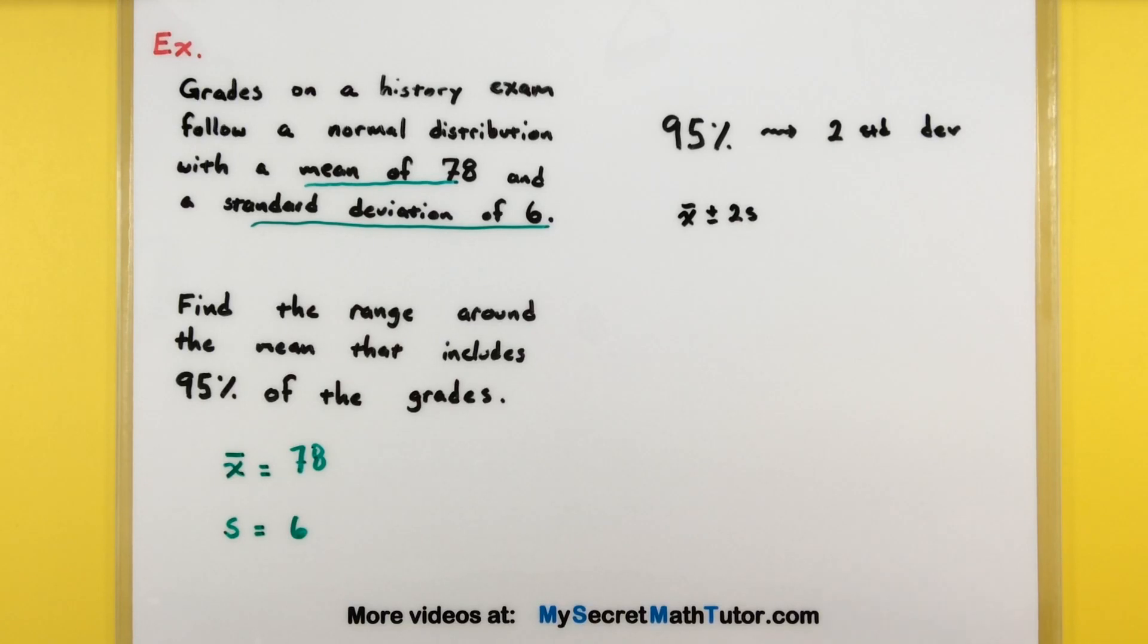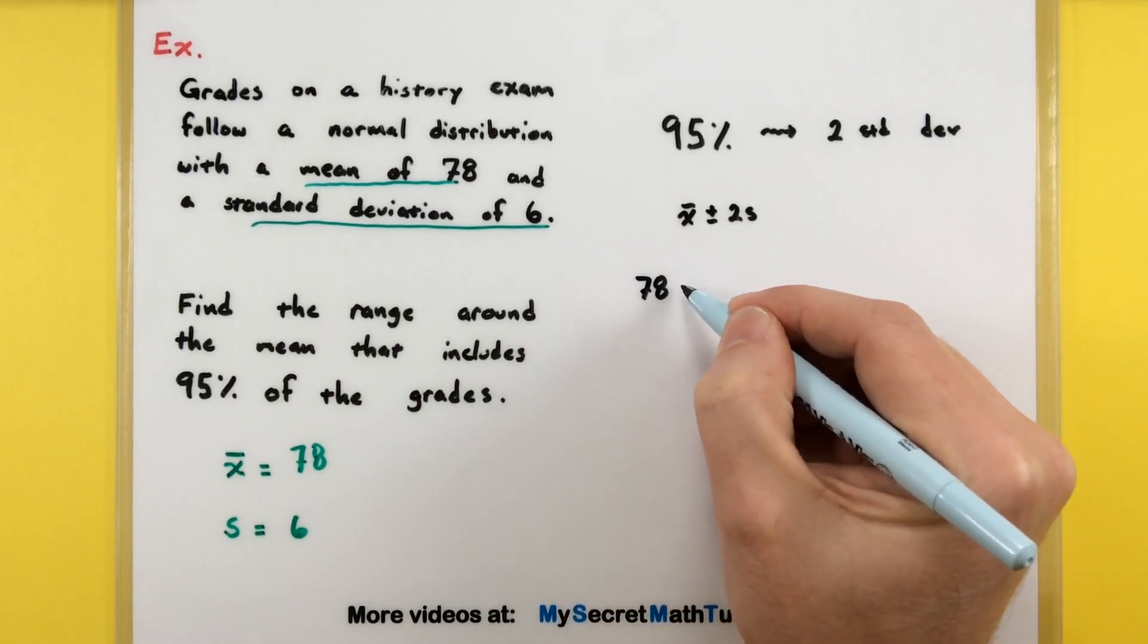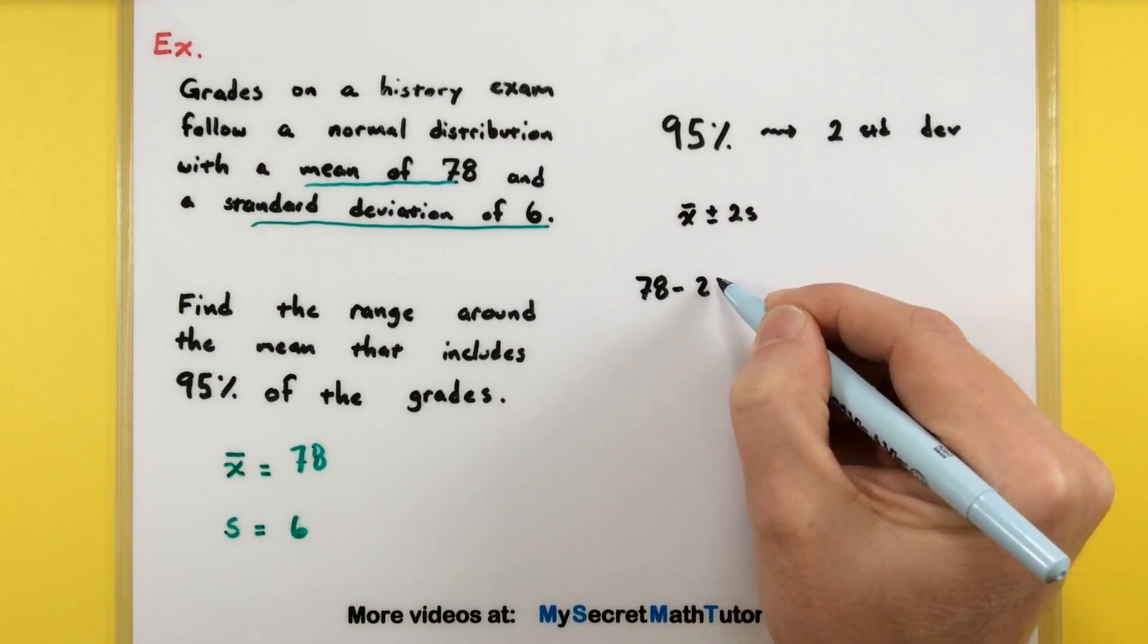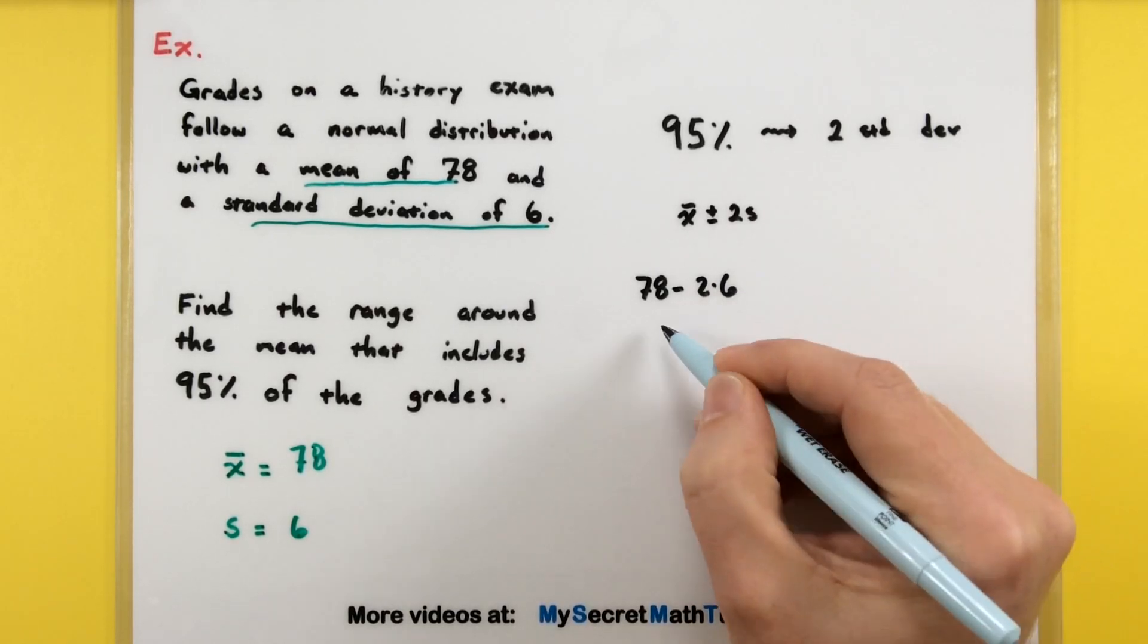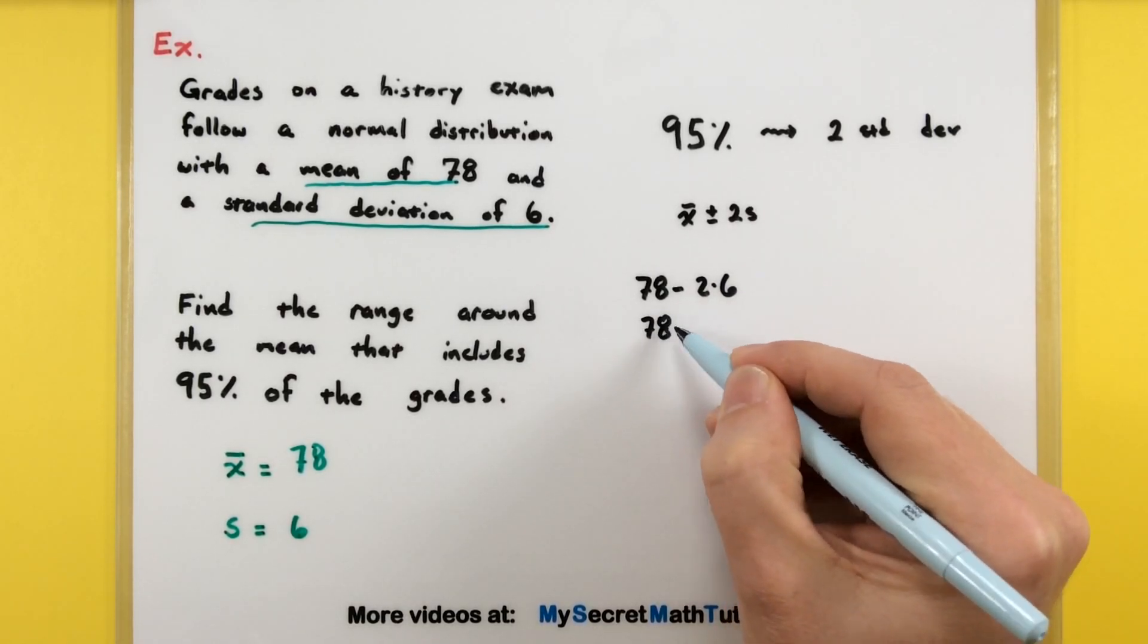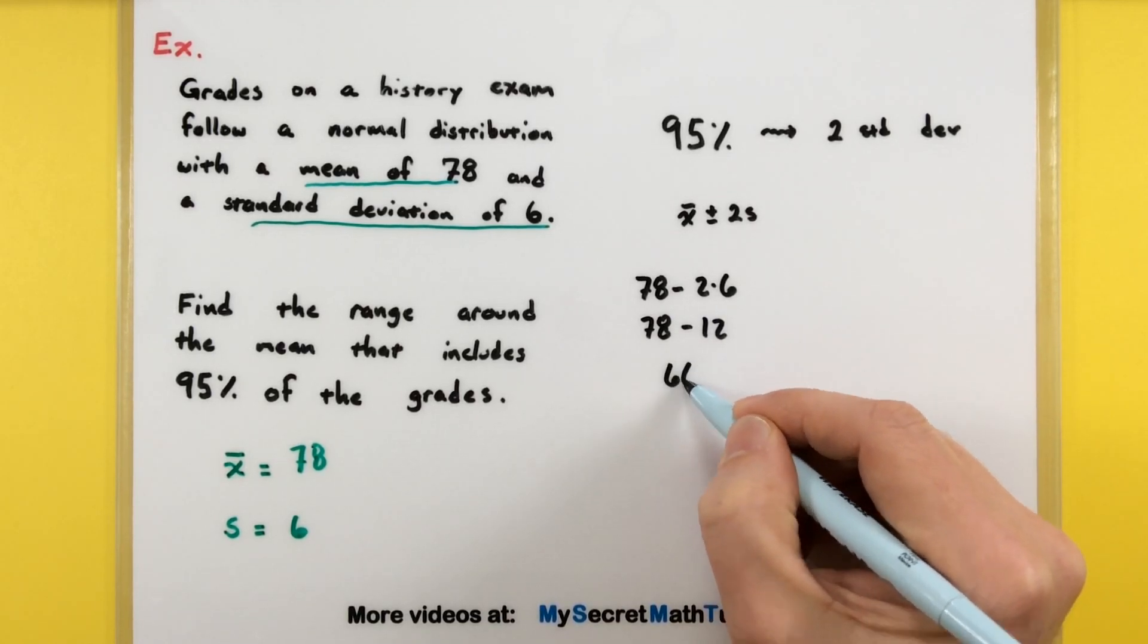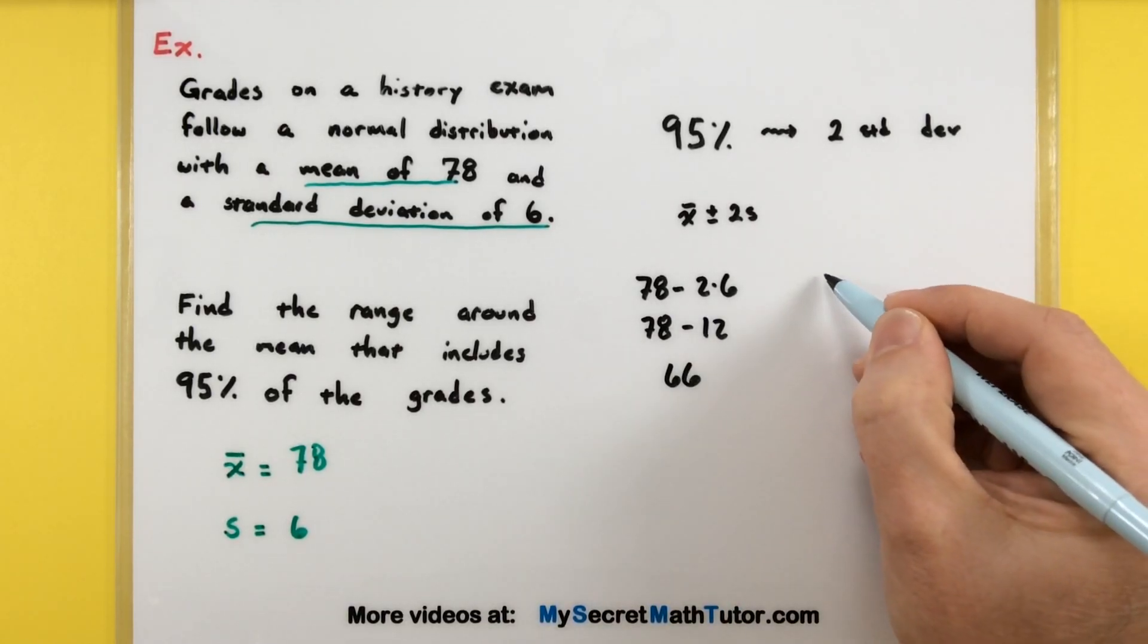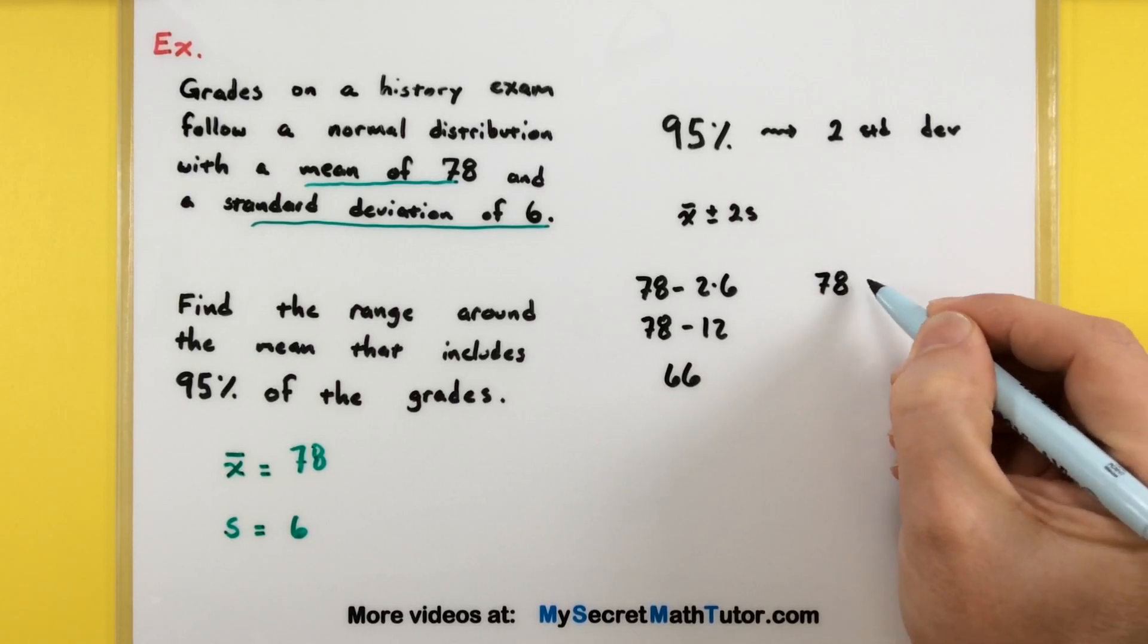Let's get that bottom range first. Our mean is 78. We will subtract two standard deviations, or 2 times 6. That'll be 78 minus 12, so our lower number is 66.